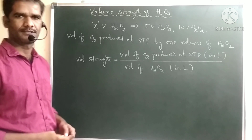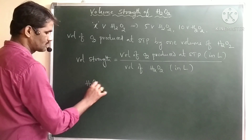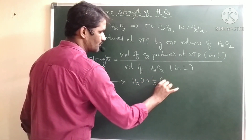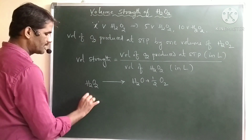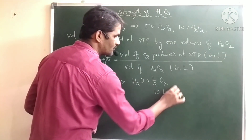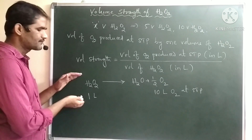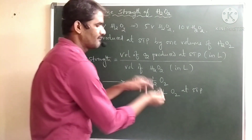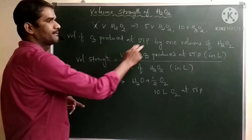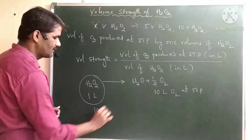Let us take one example. If H2O2 decomposes, it gives H2O and O2. Assume 1 liter of H2O2; if you decompose it you get 10 liters of O2 at STP conditions. Then the volume strength of this H2O2 is 10V, because 1 liter is producing 10 liters. So we can represent this as 10V H2O2.